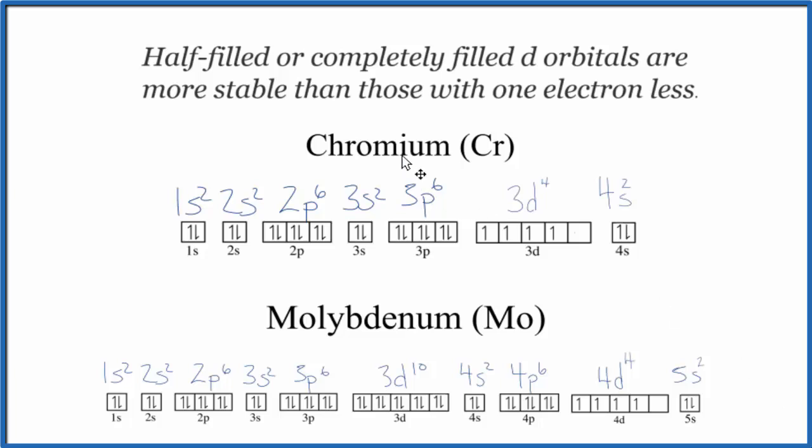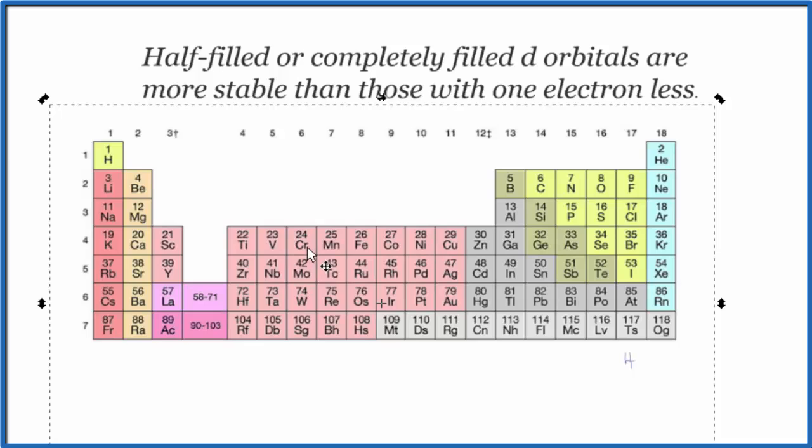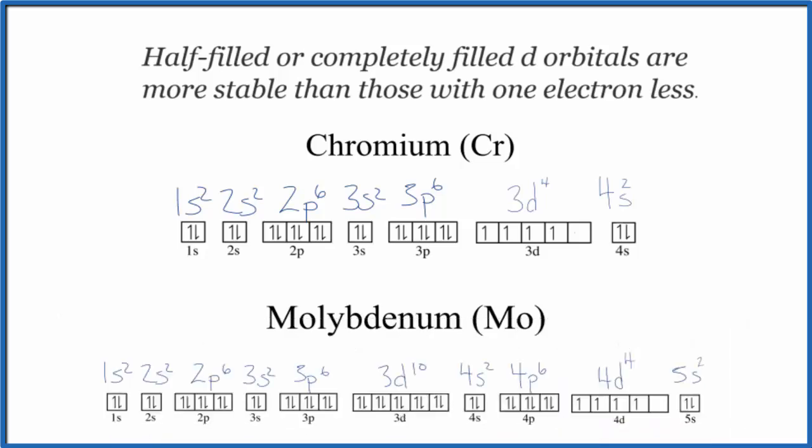We'll look first at chromium and molybdenum. These two exceptions are similar to each other, and that's not really surprising if we look at the periodic table. Here's chromium right here and then below it molybdenum. So let's look at these two exceptions first.